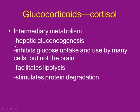Cortisol looks out for the brain — it blocks other cells from reabsorbing sugar, opposing insulin. In a high-stress situation with lots of cortisol, it can look like you have diabetes because it raises blood sugar, may cause sugar to appear in urine, and makes insulin not work properly.